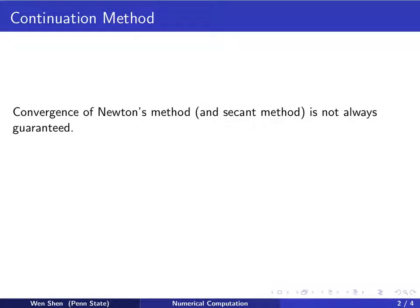So far, we have learned several methods to solve non-linear equations, such as Newton's method and Secant method. We remark that the convergence of these methods is not always guaranteed. We know Newton's method converges if the initial guess is a good one, and the same applies to Secant method.